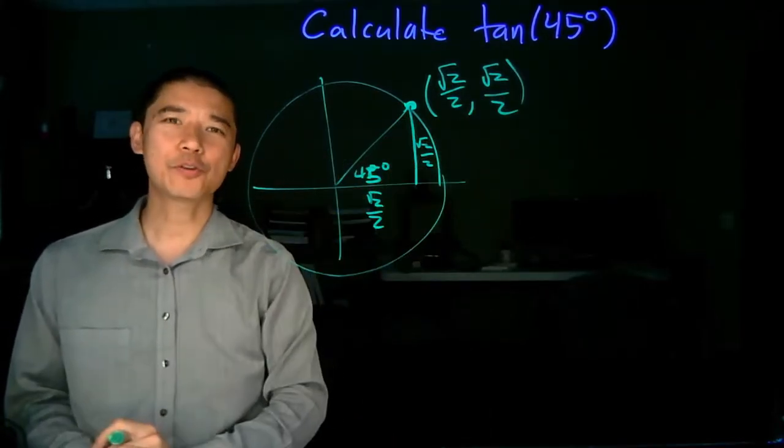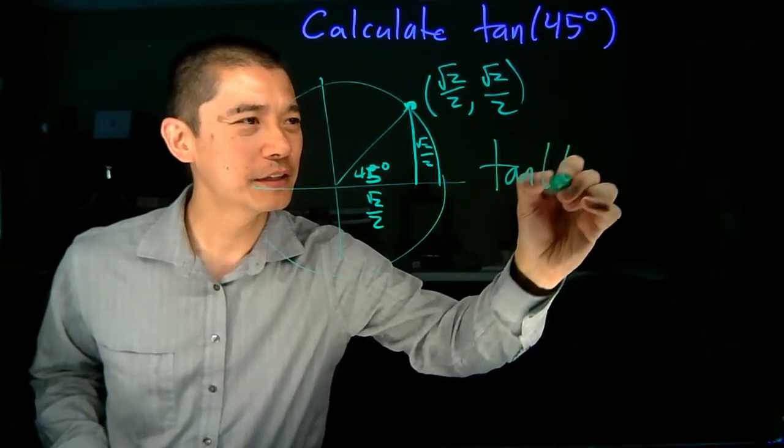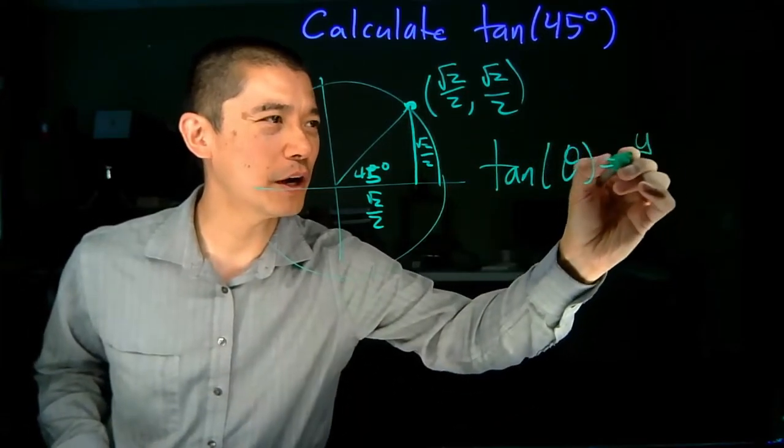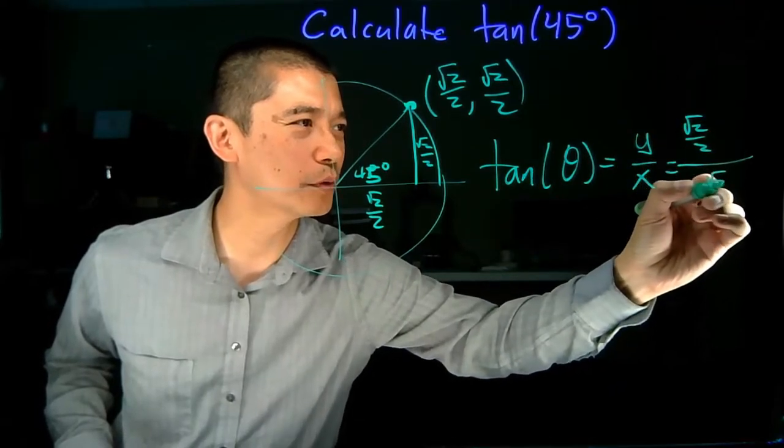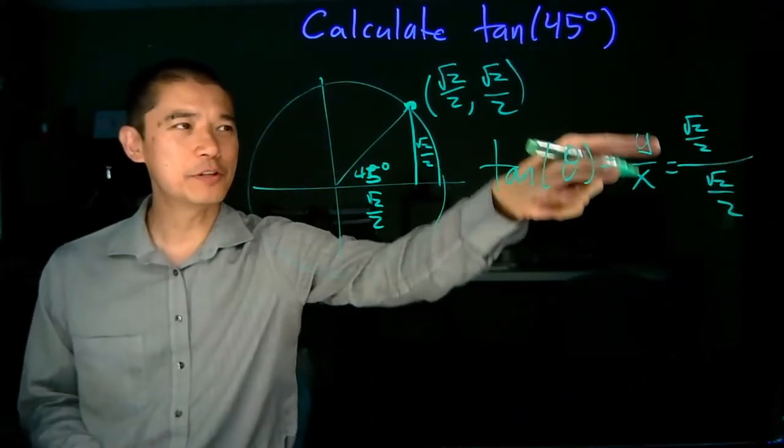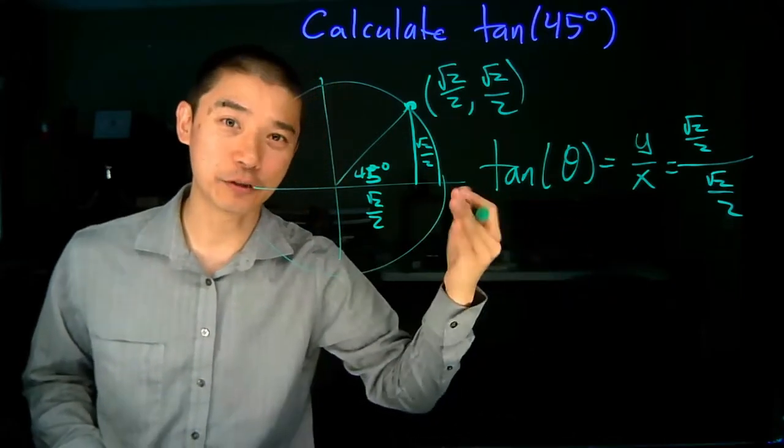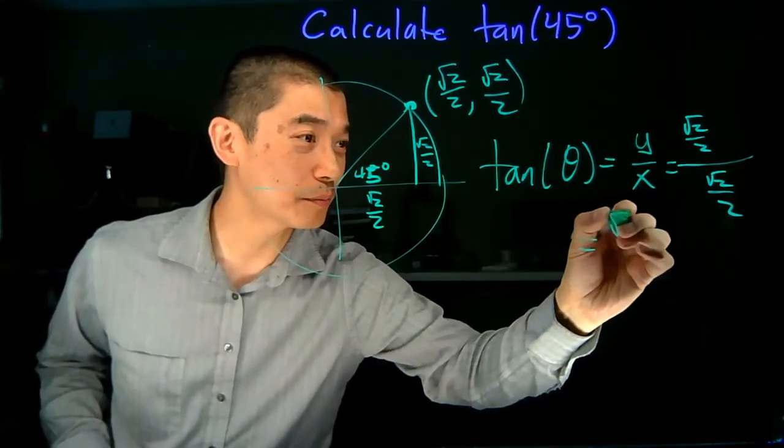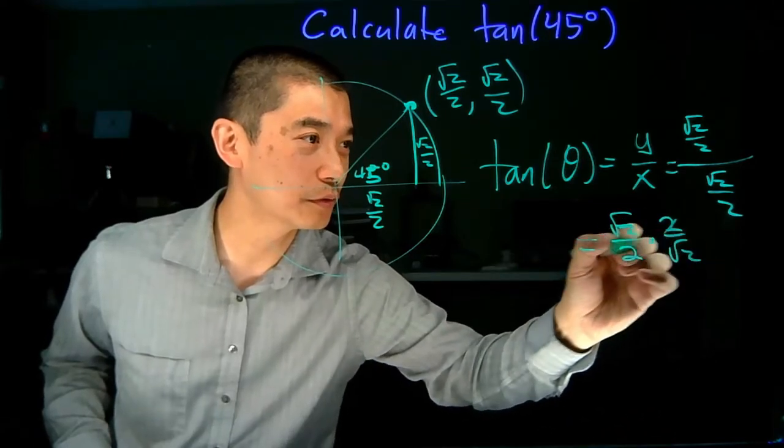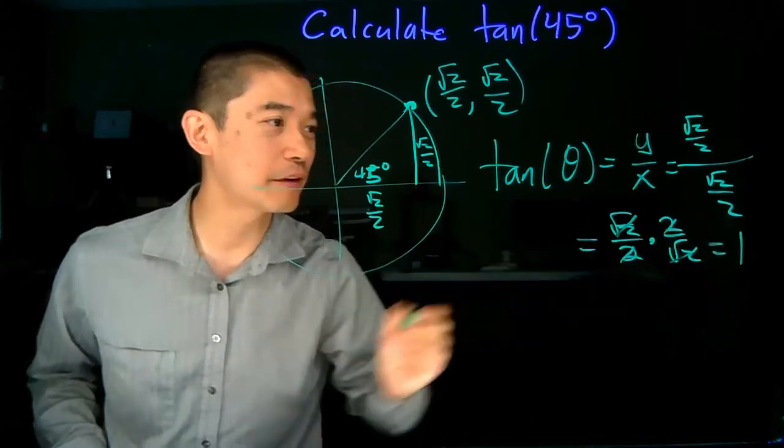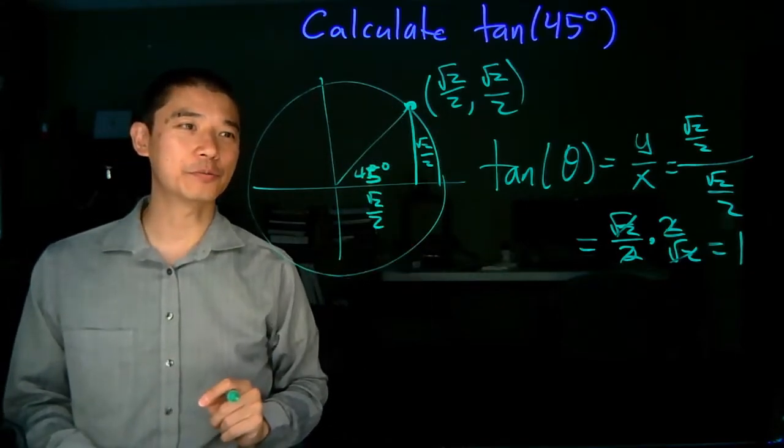Now that we know the coordinates of this point, we can just use the formula. Tangent theta is equal to y over x, which is root 2 over 2 over root 2 over 2. Now, when you do a fractions inside of fractions, which you're going to do a lot of in this section, you multiply by the reciprocal of the denominator, so 2 over root 2, the bunch of cancellation, the final result is 1. So tangent of 45 degrees is equal to 1.